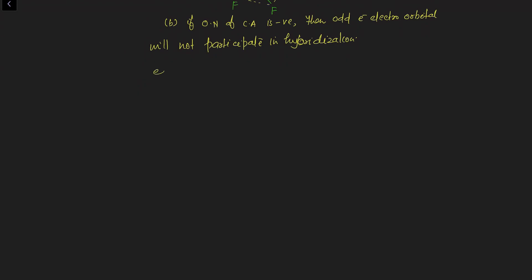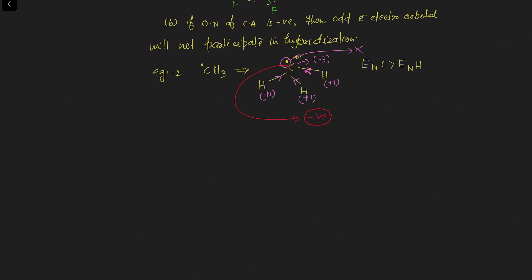Example number two: methyl free radical, CH3, with one odd electron. Drawing the Lewis dot structure of this methyl free radical, we find one odd electron on carbon. Will this odd electron participate in hybridization? Let's check the oxidation number of carbon. Since the electronegativity of carbon is more than that of hydrogen, carbon pulls all the C-H electrons towards itself. Hydrogen gets a plus one oxidation state for each, and finally carbon gets a minus three oxidation state. So the oxidation state of carbon in this methyl free radical is negative, and the conclusion is that this odd electron will NOT participate in hybridization.